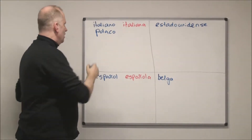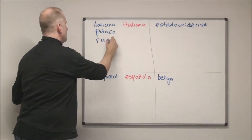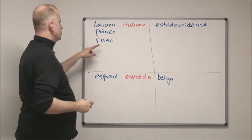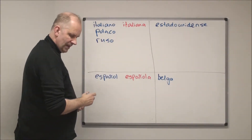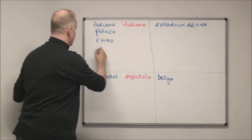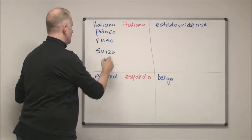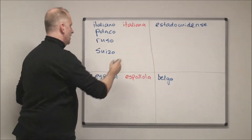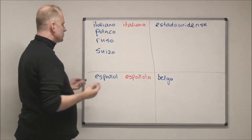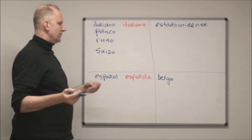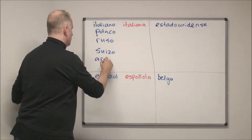More examples: 'polaco/polaca' meaning Polish, 'russo/rusa' meaning Russian, 'suizo/suiza' meaning Swiss. You can also think of 'argentino/argentina'.